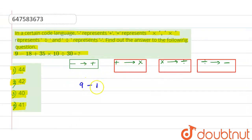Now, we write the statement: 9 minus 18 plus 35 multiply by 10 divided by 30. So first of all, we have to put the sign changes. Like minus, we have to put plus: 9 plus 18.